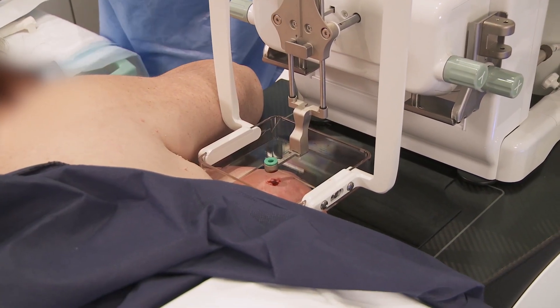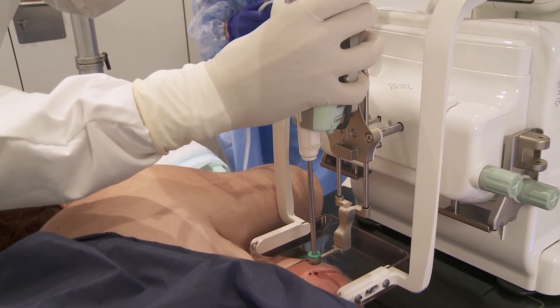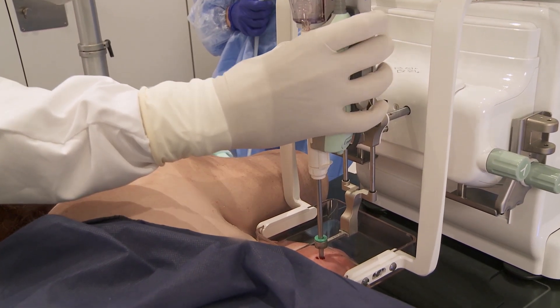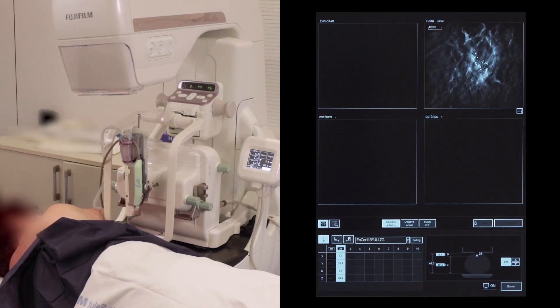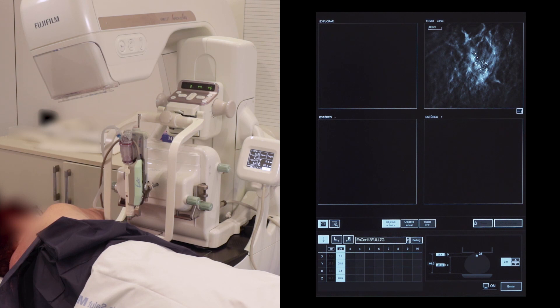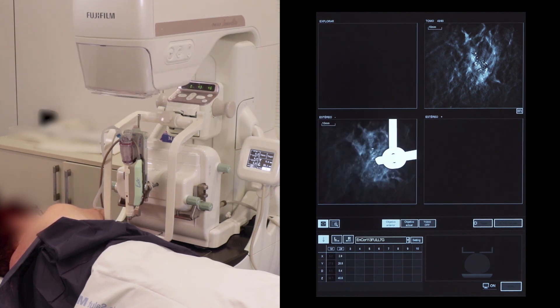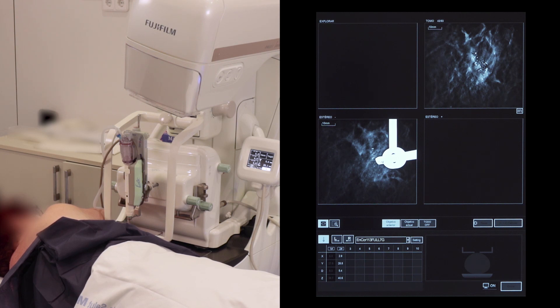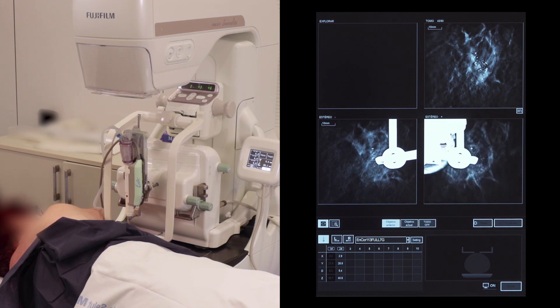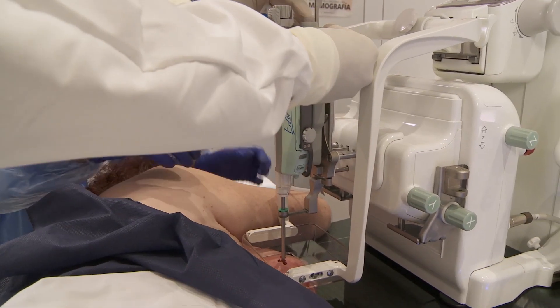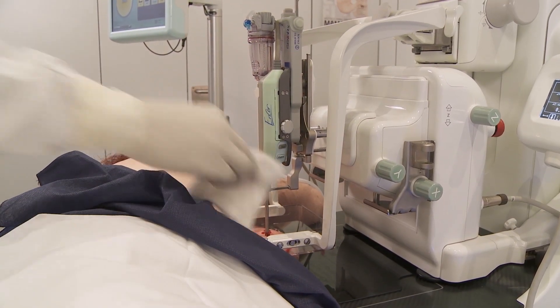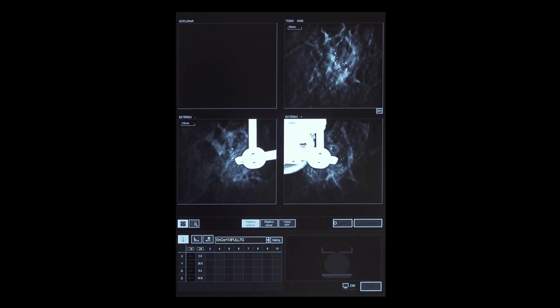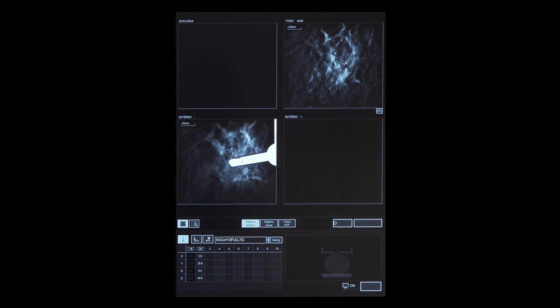Attach the NCORE 7G needle guide. Insert the 7G NCORE probe pre-fire position. A stereo pair is acquired to check needle tip location versus the target. The needle tip is approaching the target. First fire can be completed. A new stereo pair can be acquired to compare pre and post-fire images.